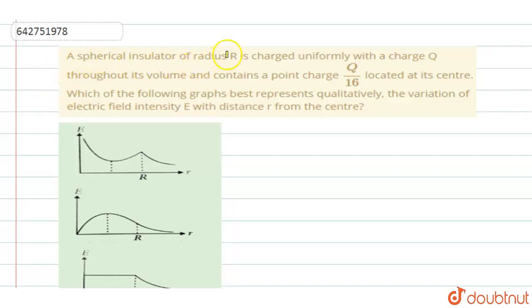The spherical insulator of radius R is charged uniformly with a charge Q throughout its volume and contains a point charge Q by 16 located at its center. Which of the following graphs best represents qualitatively the variation of electric field intensity E with distance R from the center?